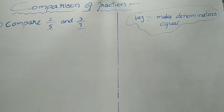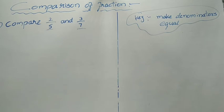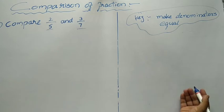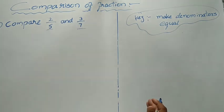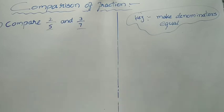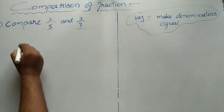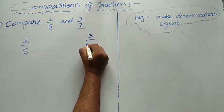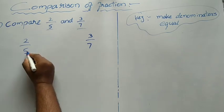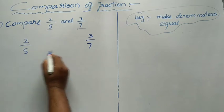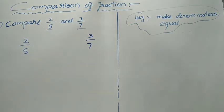Now we will go for original problems. First, compare 2 by 5 and 3 by 7. The basic principle is: first we want to see whether the denominators are equal or not. If equal, we can compare directly as before. But when the denominators are not equal, we must make the denominators equal by applying equivalent fractions. Here the denominator 5 and 7 are co-prime numbers. So I will multiply this fraction by 7 and this fraction by 5.